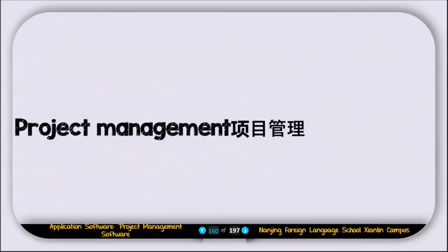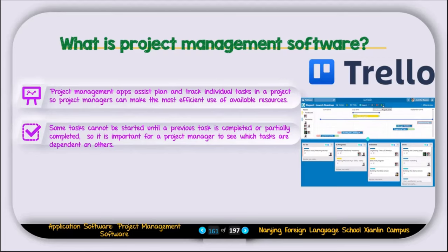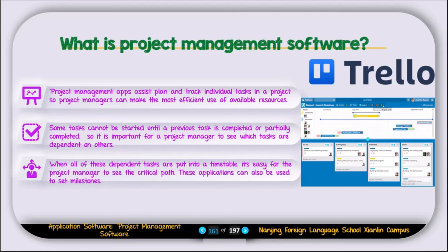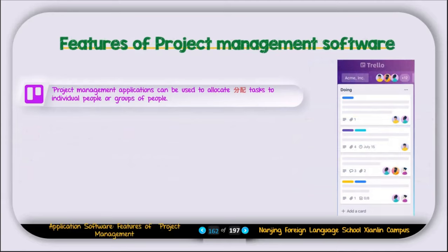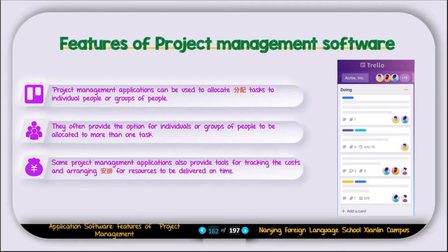The next type of application software is project management software. A project management app assists in planning and tracking individual tasks in a project so that project managers can make the most efficient use of available resources. Some tasks cannot be started until a previous task is completed or partially completed, so it is important for a project manager to see which tasks are dependent on others. When all dependent tasks are put into a timetable, it's easy to see the critical path. These applications can also be used to set milestones, allocate tasks to individuals or groups, and track costs and resource delivery.